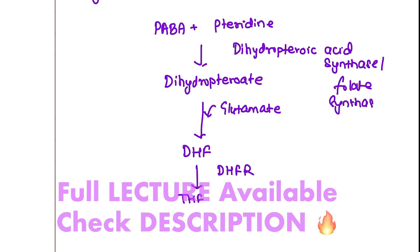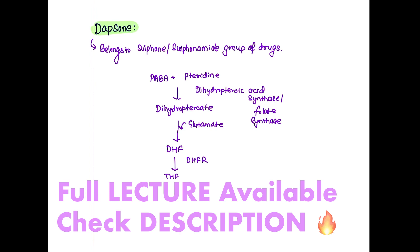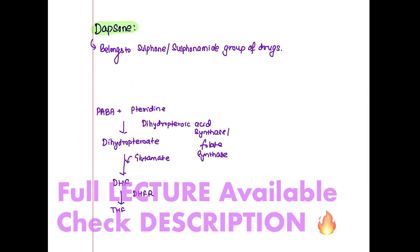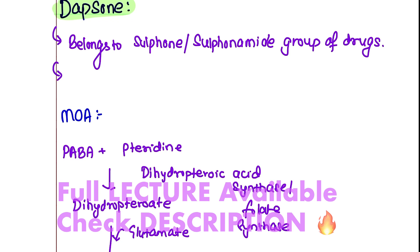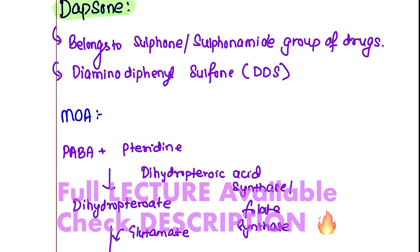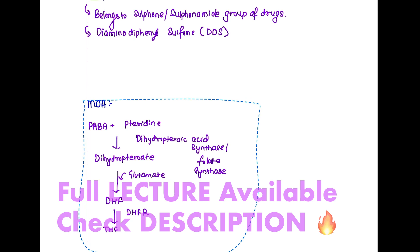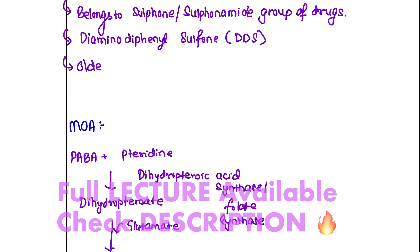This folate synthase inhibition is the mechanism of action of Dapsone, and it is very similar to that of sulfonamides. Dapsone is also called diaminodiphenyl sulfone, abbreviated as DDS. It is the oldest, simplest, cheapest, and most active anti-leprosy drug.